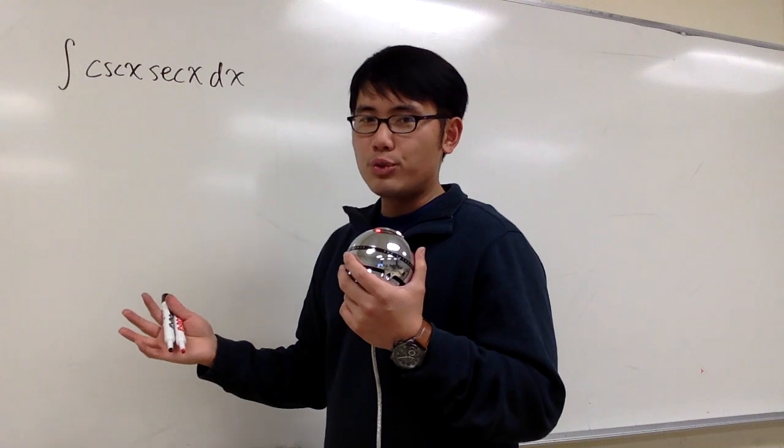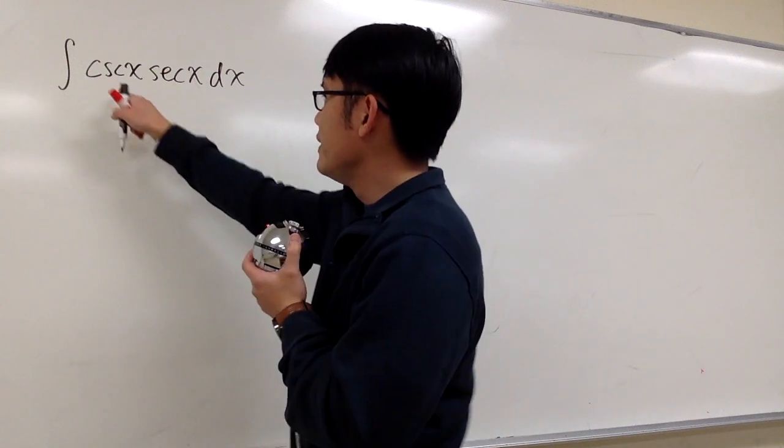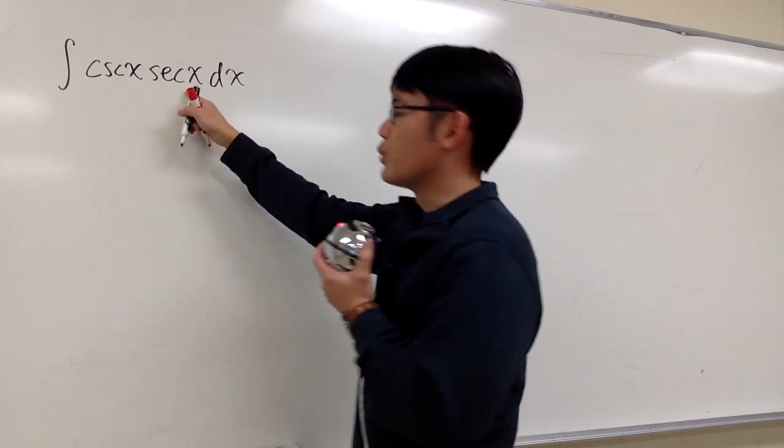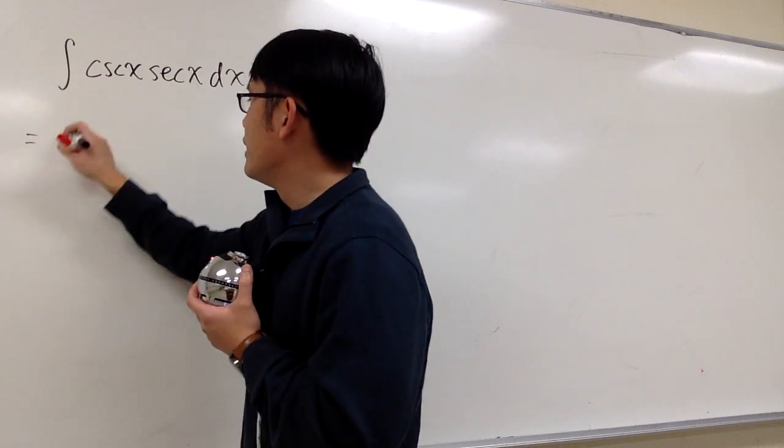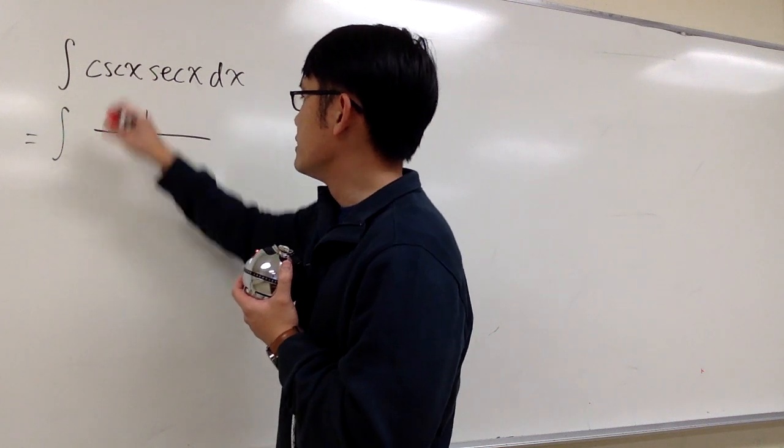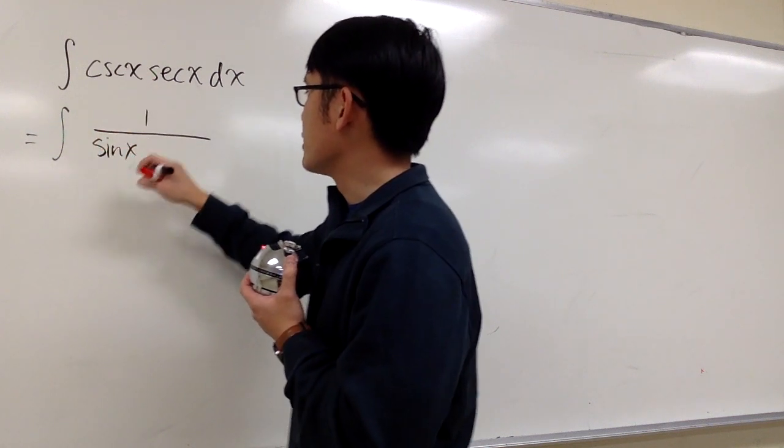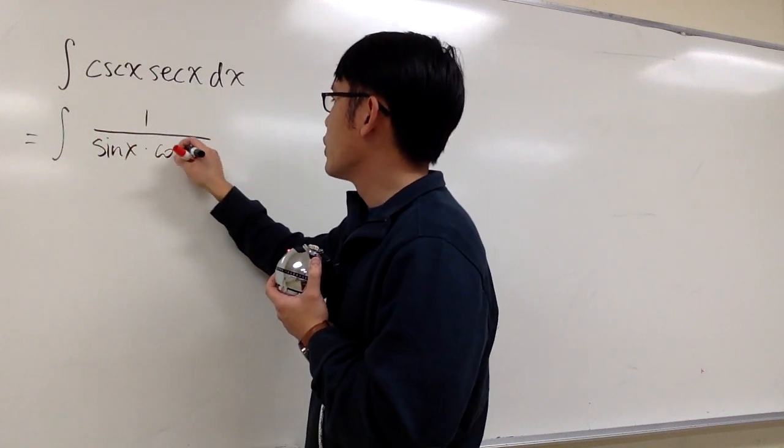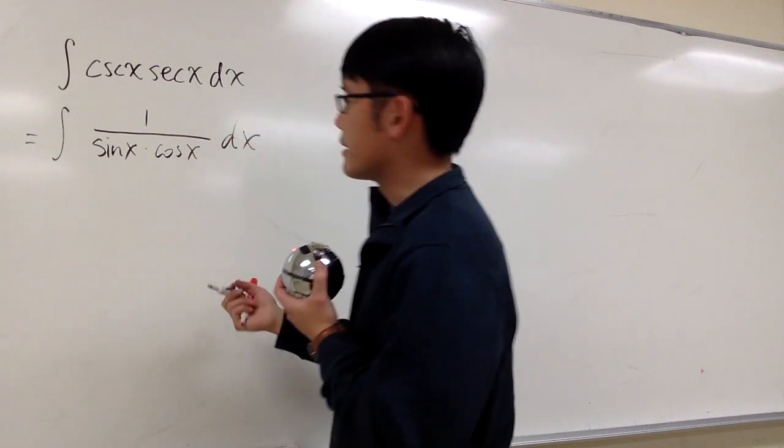How about let's just try to write everything in terms of sine and cosine. This is 1 over sine x, and this is 1 over cosine x. Let's do that first. So this is the same as integrating, I can put a 1 on the top over sine x on the bottom, and then cosine x on the bottom, like this.